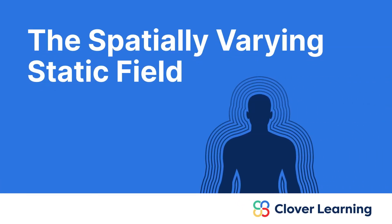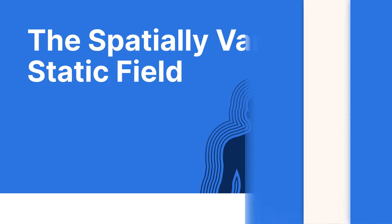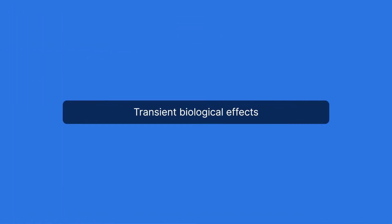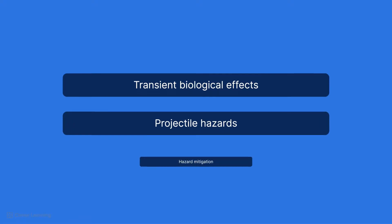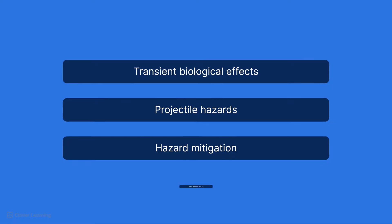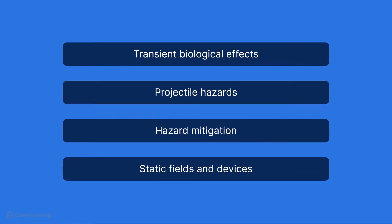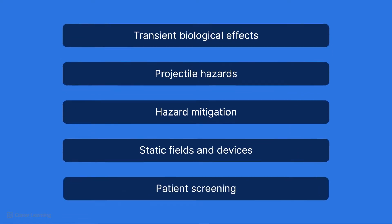Welcome back, everybody, to our series on MRI safety. This video is on the spatially varying static field in MRI. It will cover the transient biological effects of the spatially varying static field, the hazards of projectiles in the MRI environment, ways to mitigate these hazards, the impact of the static field on implanted devices, and the importance of screening patients for intraorbital foreign bodies.